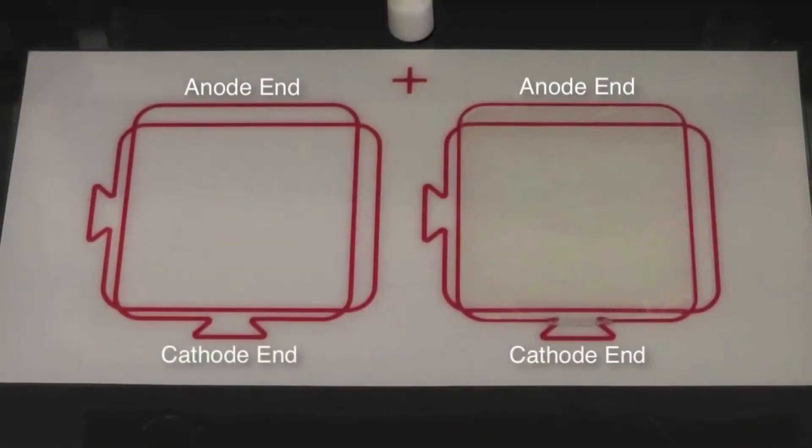With a tweezer, lift the thin plastic protective film on the gel. The gel has an anode end and a cathode end. The cathode end of the gel is indicated by the protruding plastic tab.